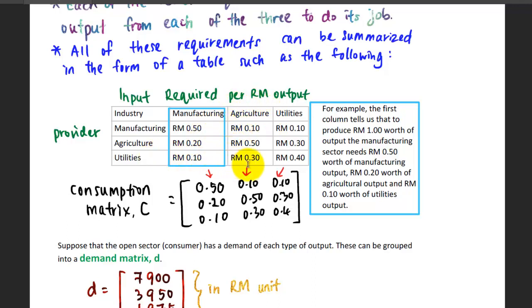For the second column, similarly you can use the same interpretation. To produce agricultural products, you need to spend maybe 10 cents from your one ringgit worth of output on manufacturing, maybe the machine, and 50 cents from agriculture. You're going to get some raw materials from another agriculture industry, and 30 cents will be on utilities.